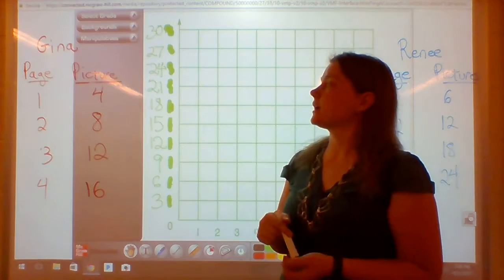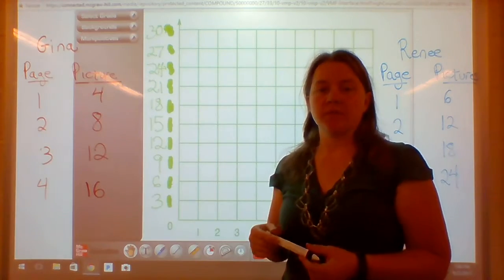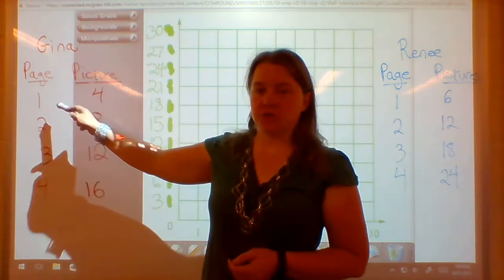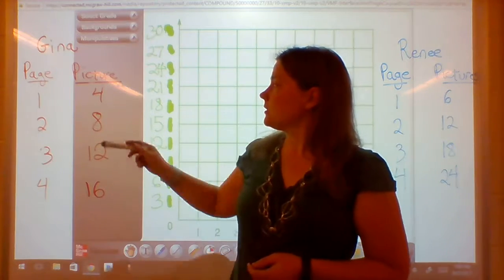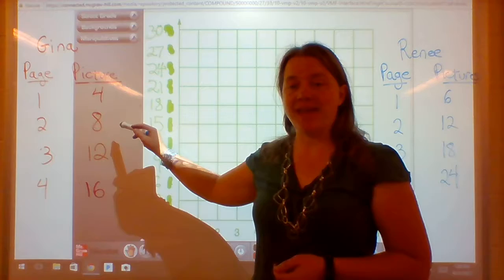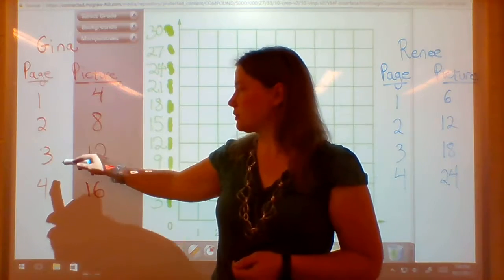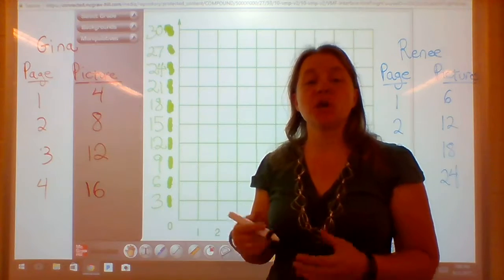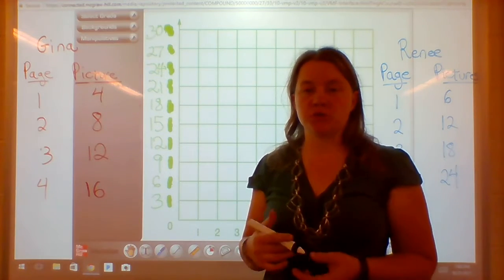Next, we're going to look at some scrapbooking. Gina can fit 4 pictures on 1 page of her scrapbooking book. So 4 pictures on page 1, and page 2 she'll have 8 pictures total. On page 3 she'll have 12 pictures, and on page 4 she'll have 16 pictures total. That's how many total pictures she can fit in.